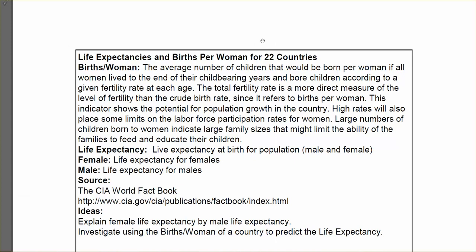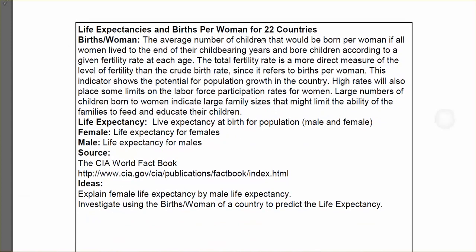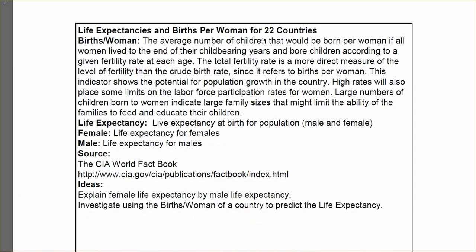So it's for 22 countries. The births per woman figure is the average number of children that would be born per woman if all women lived to the end of their childbearing years and bore children according to a given fertility rate at each age. The total fertility rate is a more direct measure of the level of fertility than the crude birth rate since it refers to births per woman.